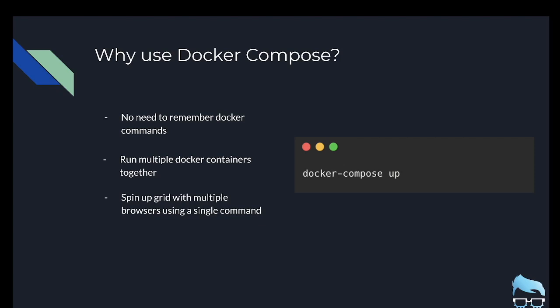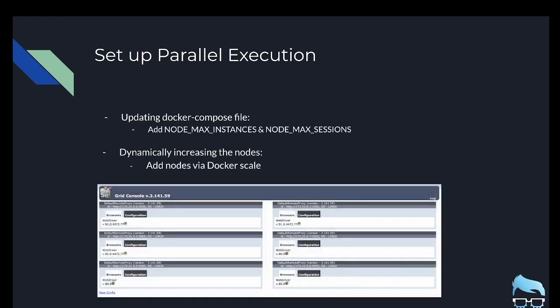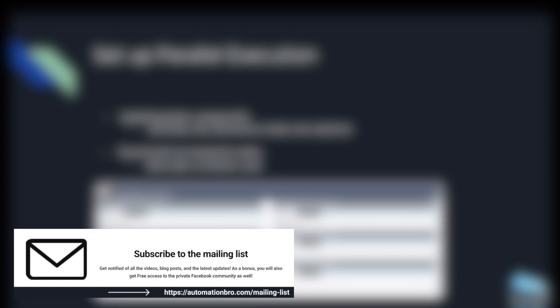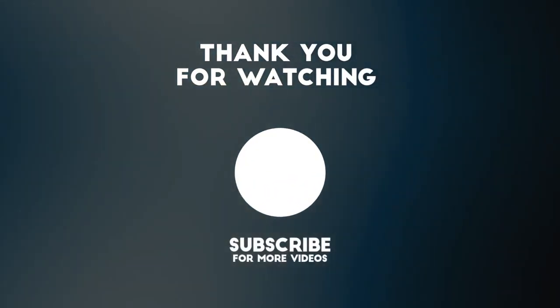To quickly sum up: you can use Docker Compose to run multiple Docker containers together and spin up your grid with multiple browsers using just one command. Team members who aren't familiar with Docker just run docker compose up without worrying about the underlying Docker Compose configuration. We set up a grid with multiple browsers and looked at parallel execution using Docker Compose and docker scale to dynamically increase nodes. That's it for this video — if you have comments, let me know below, hit the like button, subscribe to the channel and mailing list for the latest videos and blog posts each week.